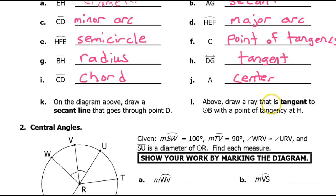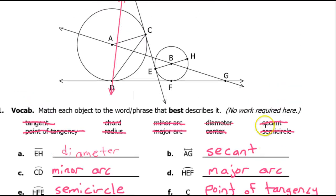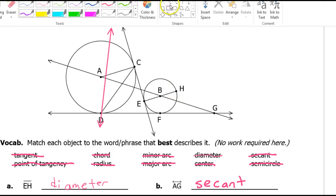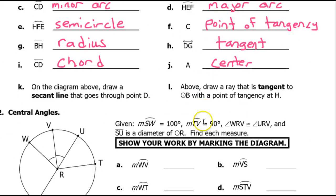Draw a ray that is tangent to circle B with a point of tangency at H. So we want a ray that's tangent at point H. That would look something like this.